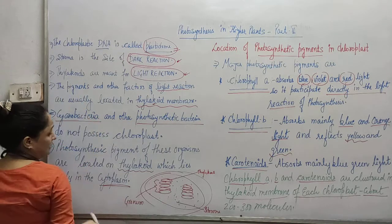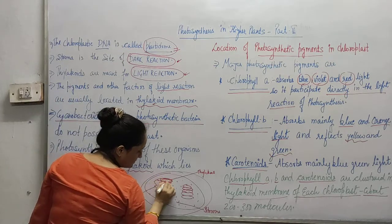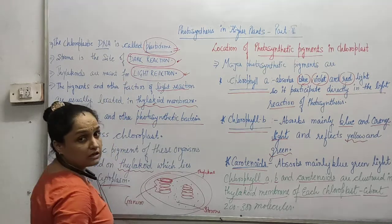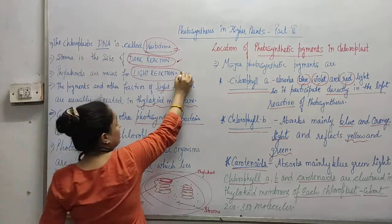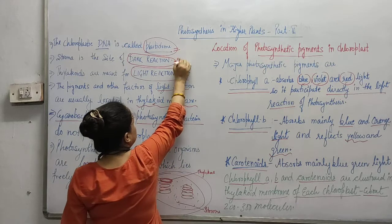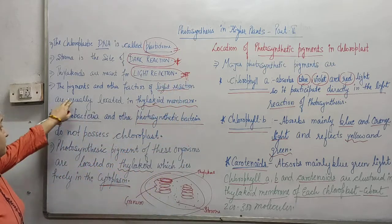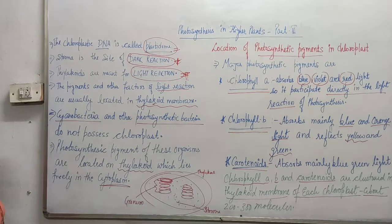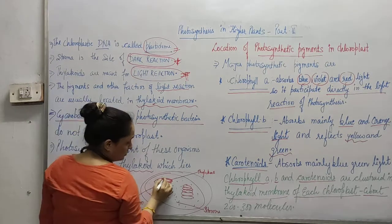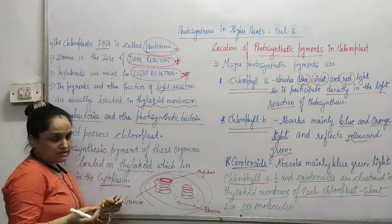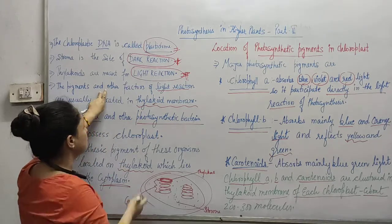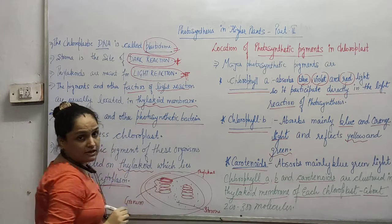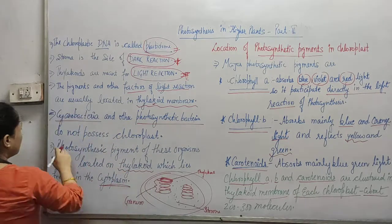Next, in the picture, are the thylakoids. These thylakoids are responsible for performing the light reaction, so the light reaction will be performed inside the thylakoids. The pigments and other factors of light reactions are usually located in the thylakoid membrane.